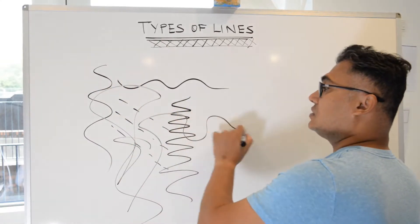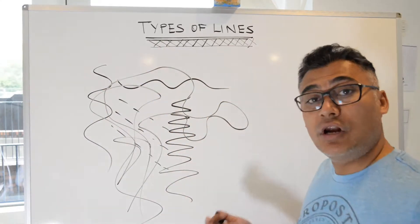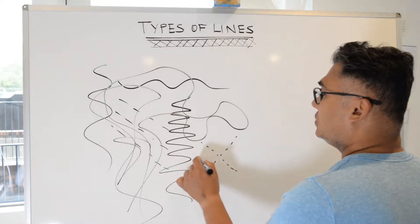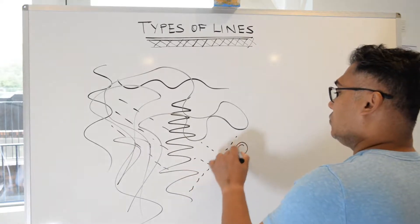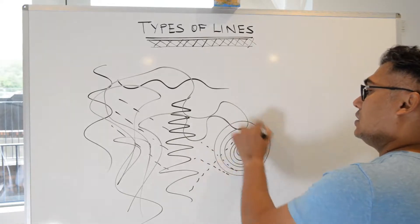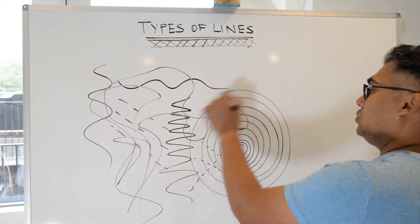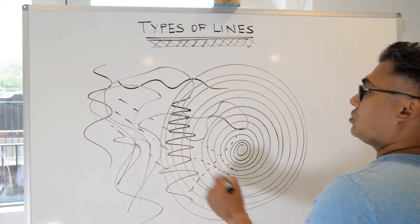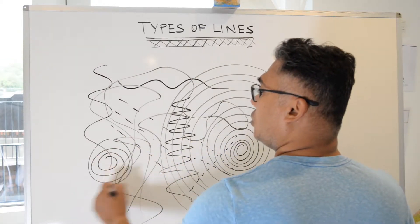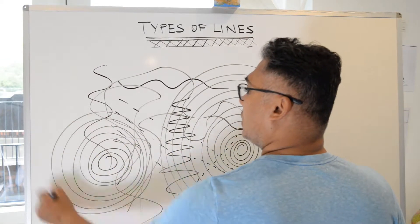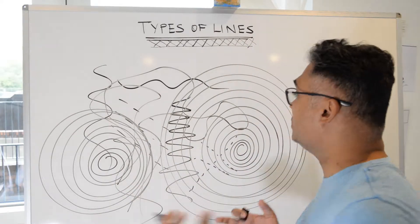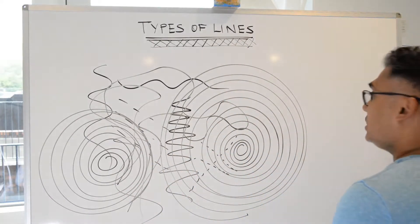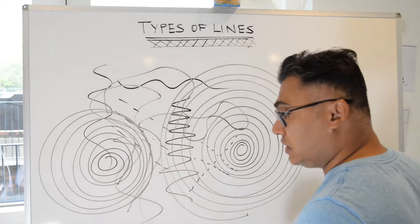You can have dotted lines, dashes, concentric lines that go in a circular motion — whether anti-clockwise or clockwise — and concentric circles. So there are many different types of lines. The lines we wanted to address today: we have five different types of lines we're going to look at.